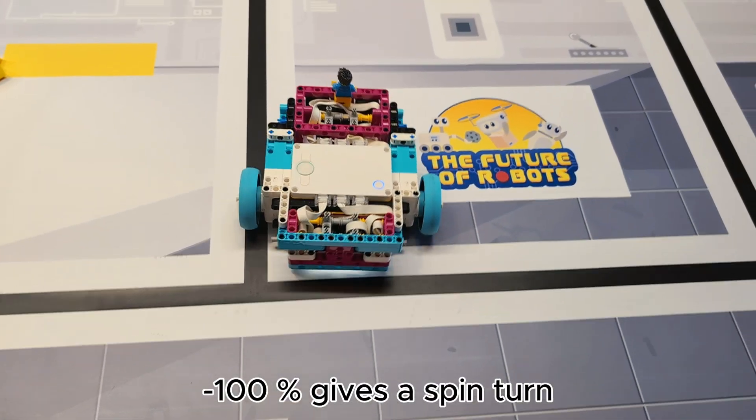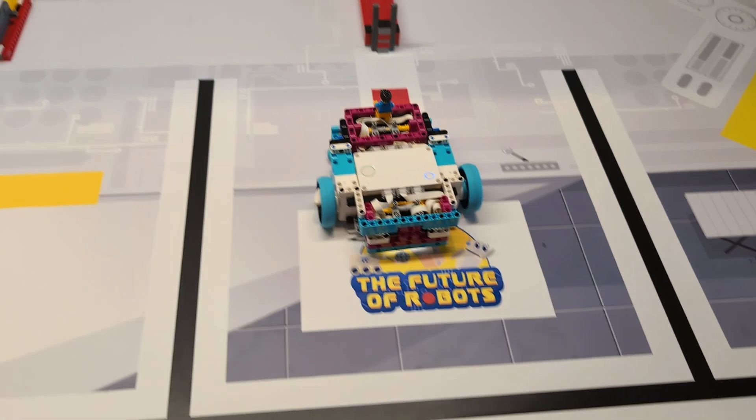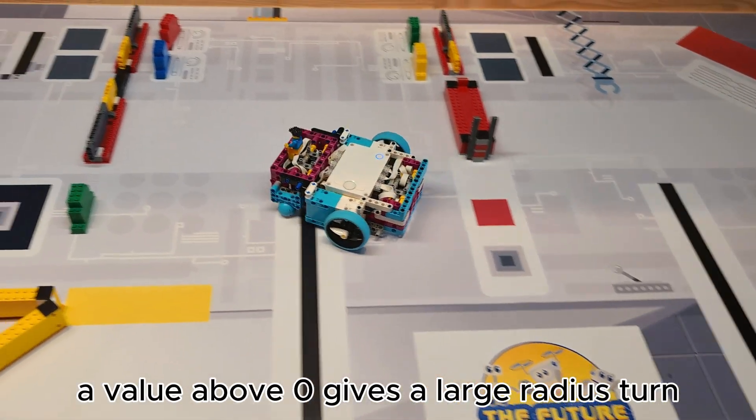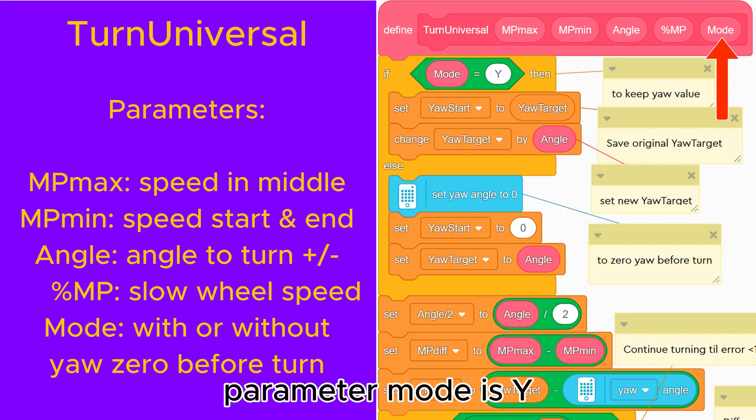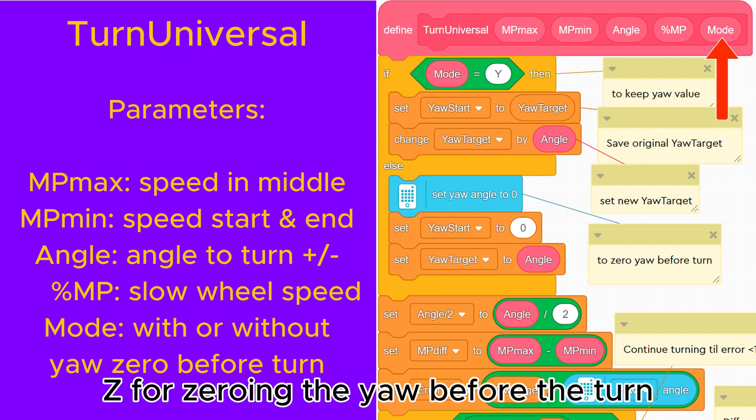Minus 100% gives a spin turn. 0% gives a pivot turn. A value above zero gives a large radius turn. Parameter mode is Y for keeping the original yaw value, Z for zeroing the yaw before the turn.